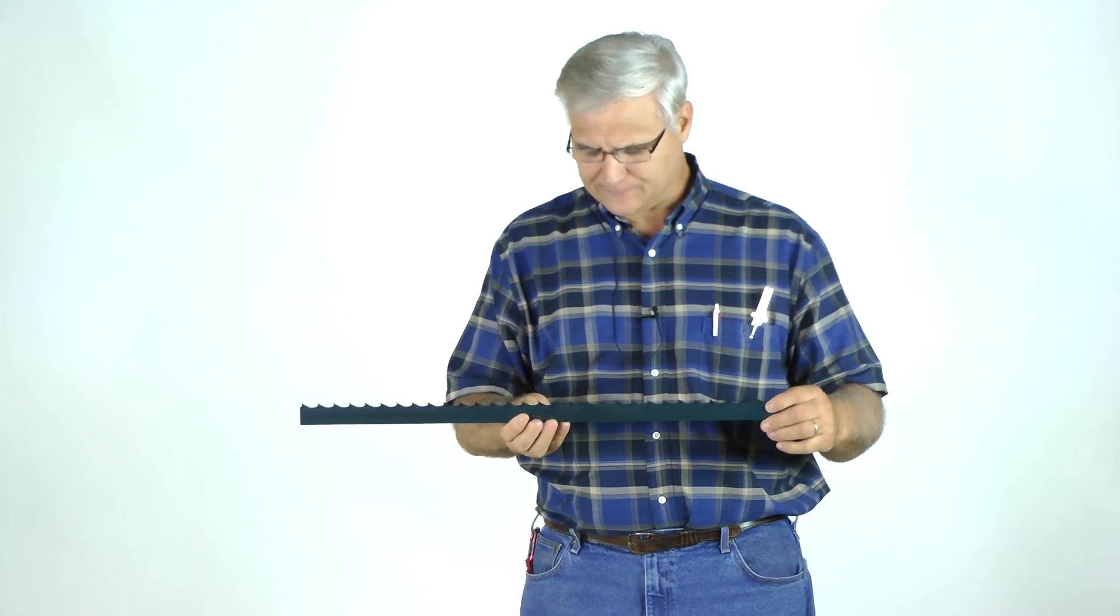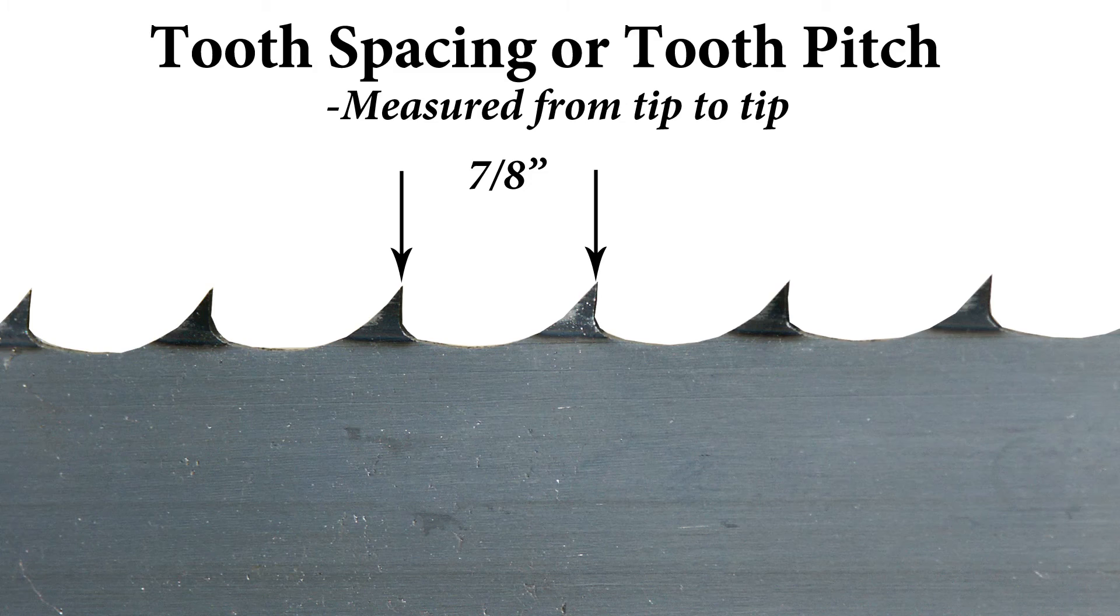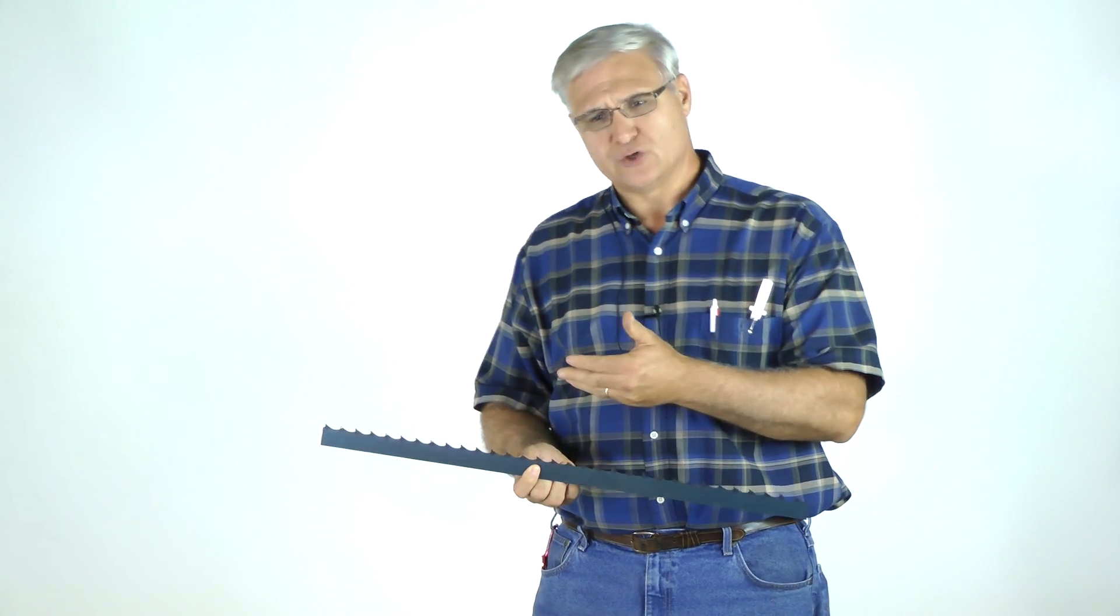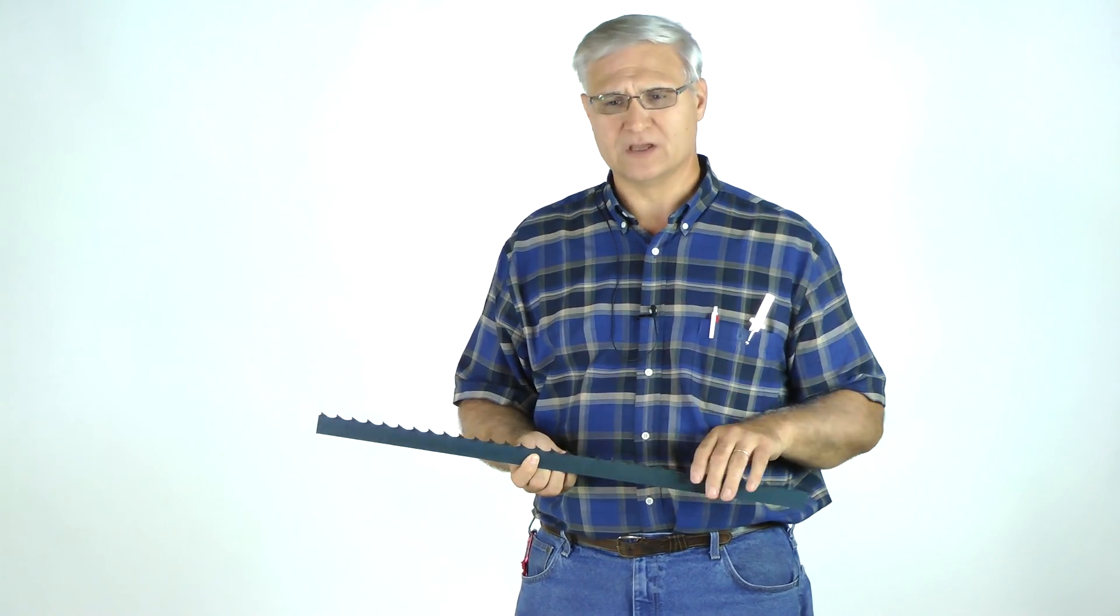The tooth spacing, common tooth spacings. In your resaw is half inch, five eighths. We've popularized the five eighths tooth spacing. Then we have seven eighths is very popular, and one inch tooth spacing as you get into usually the inch and a half and two inch wide.